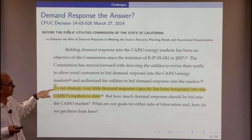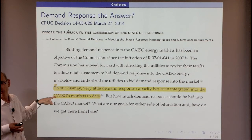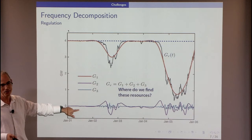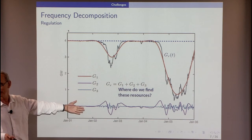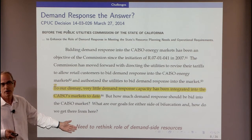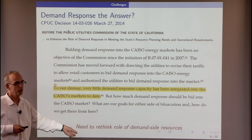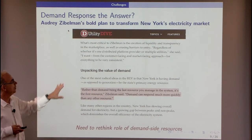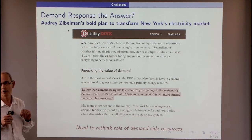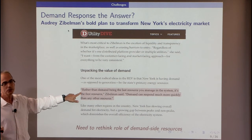In New York, Audrey Zibelman came in as Public Service Commissioner wanting to completely redo New York and make demand resources the first resort for managing the grid — she's right on. But she needs engineers to talk to, not just economists. It's easy to think about how aluminum manufacturing can engage in contracts with California ISO to reduce load from 2 PM to 6 PM for big industrial consumers. But we've been focusing on residential consumers because it looks so hard at first.